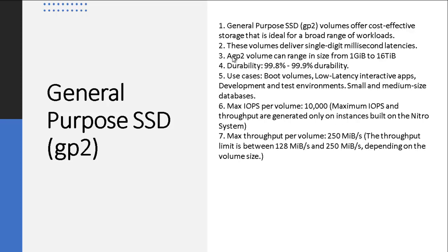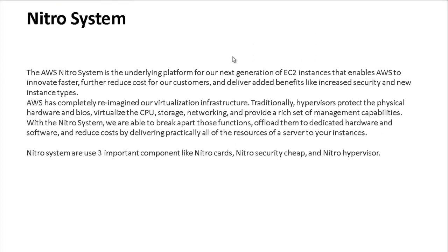Maximum throughput per volume for GP2 is 250 MB/s, with throughput limits ranging between 128 MB and 250 MB depending on volume size. The AWS Nitro system is the underlying platform for next-generation EC2 instances that enables AWS to innovate faster, further reduce costs for customers, and deliver added benefits like increased security and new instance types.